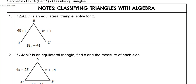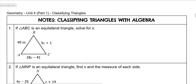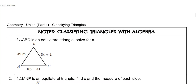Hey guys, I'm going to go over classifying triangles with algebra. It'll tell you what the triangle is, and you use your knowledge of that in order to set up the problem. So this one says it's an equilateral, which means all the sides are the same.